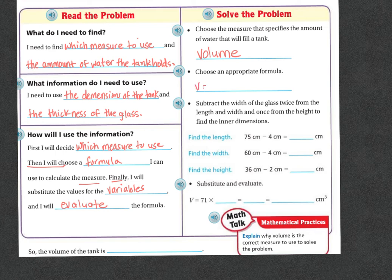Now choose an appropriate formula. I know that volume equals length times width times height. If I subtract the width of the glass twice from the length and width and once from the height, then I'm going to find the inner dimensions because remember there was that two inches. So to find the length, it's going to be the 75 centimeters minus the four inches. Remember there was two centimeters on either side. That was the thickness of the glass.